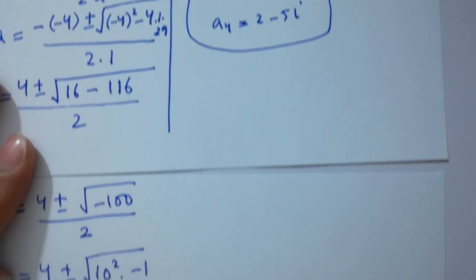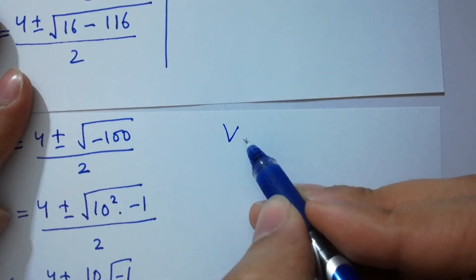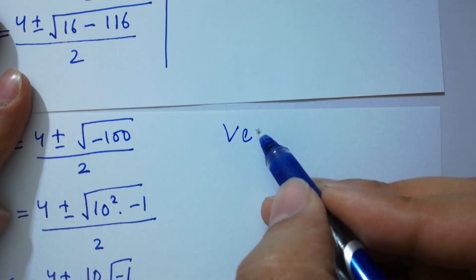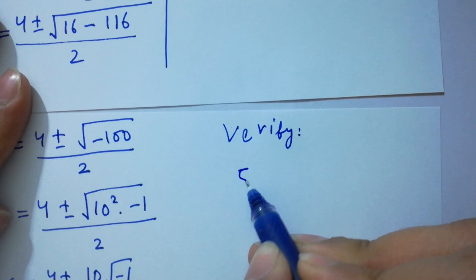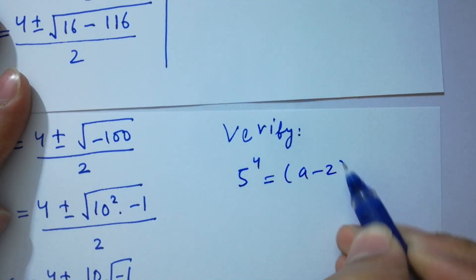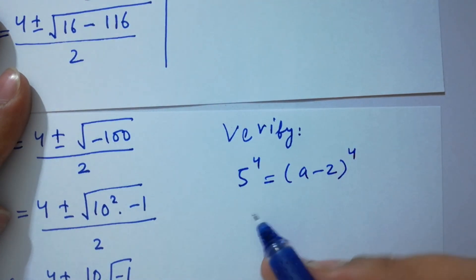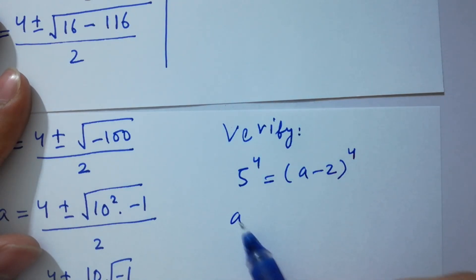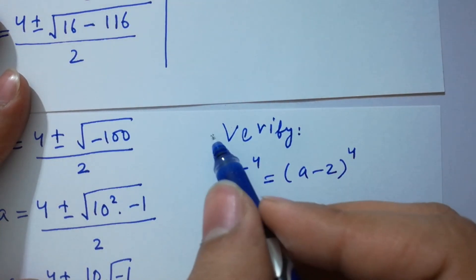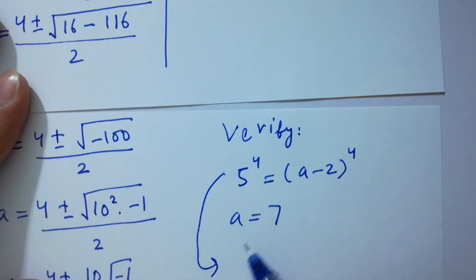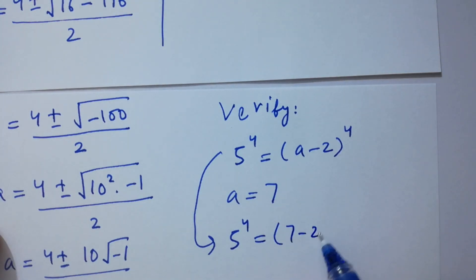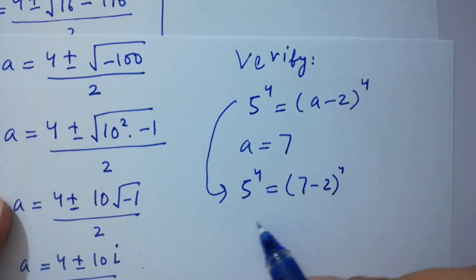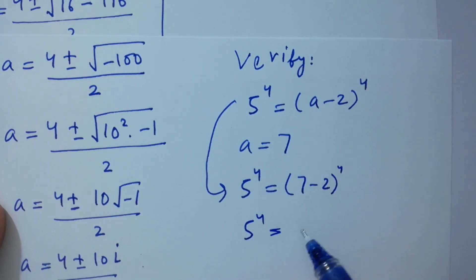To verify, putting a equals 7 into 5 to the power 4 equals (a minus 2) to the power 4: we get 5⁴ equals (7 minus 2)⁴ equals 5⁴. This confirms the solution is correct.